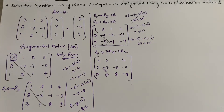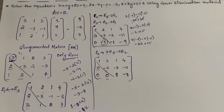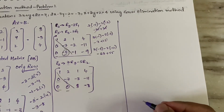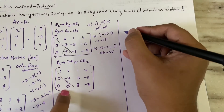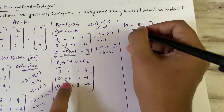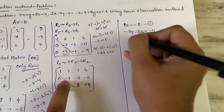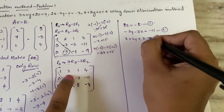Now see the diagonal — this is the diagonal and all elements below it are zero. We've got the echelon form, so we stop the row operations. Now we form the equations from the rows in reverse: from R3, 8z = -8 (equation 1); from R2, -7y - 3z = -11 (equation 2); from R1, x + 2y + z = 4 (equation 3).